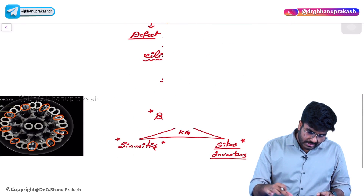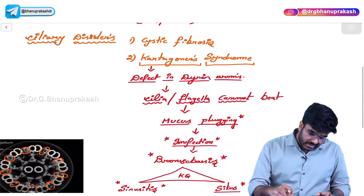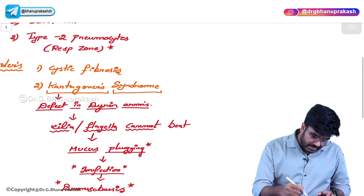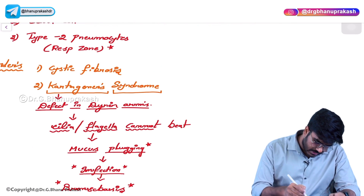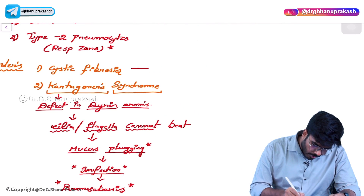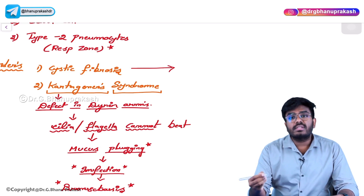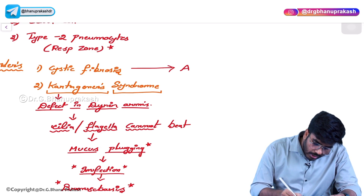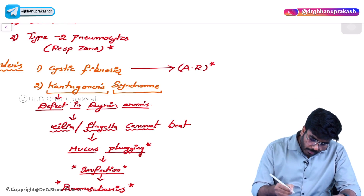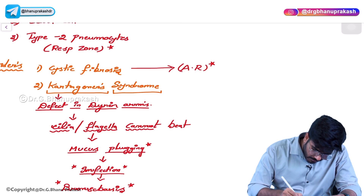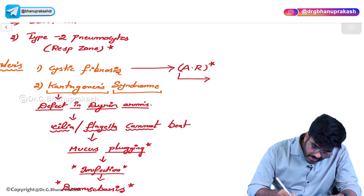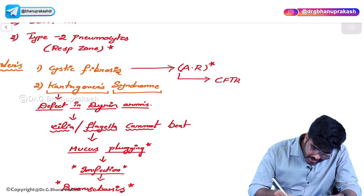After this, let's discuss about the second pathology - cystic fibrosis. Cystic fibrosis is an autosomal recessive disorder - this is a very important question. The second important point is the gene mutation: cystic fibrosis is caused by CFTR gene mutation. This is a very important MCQ - the CFTR gene is mutated.